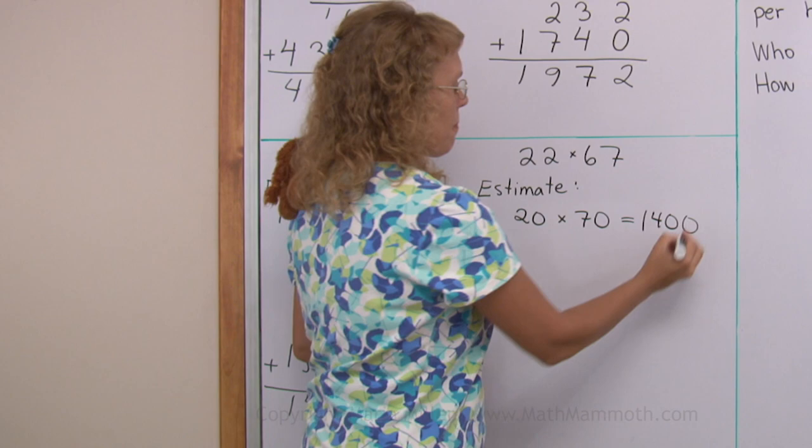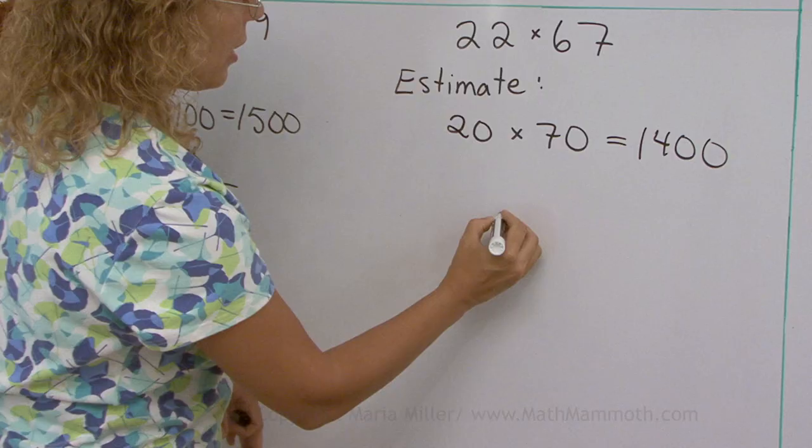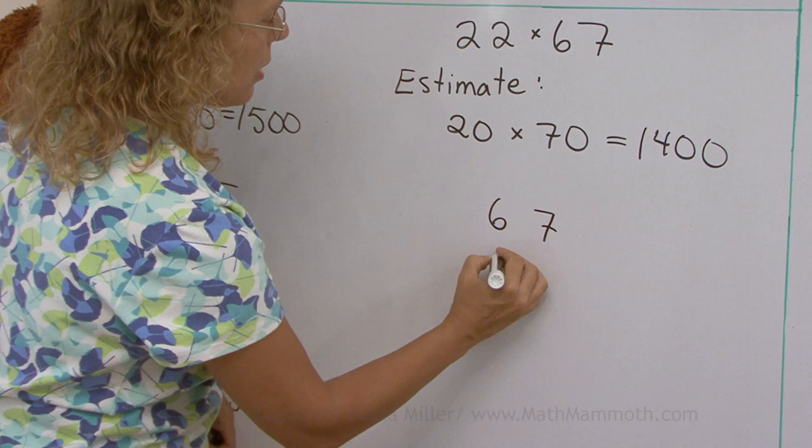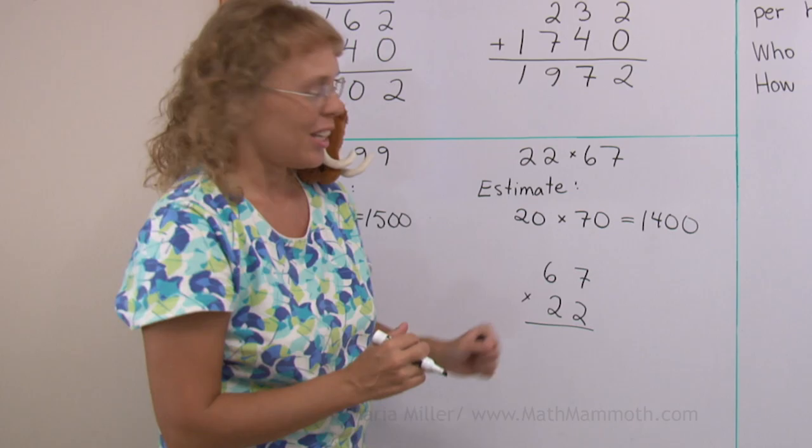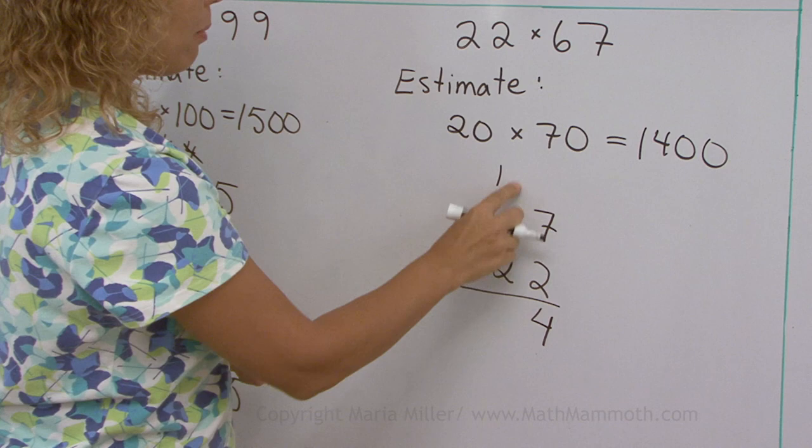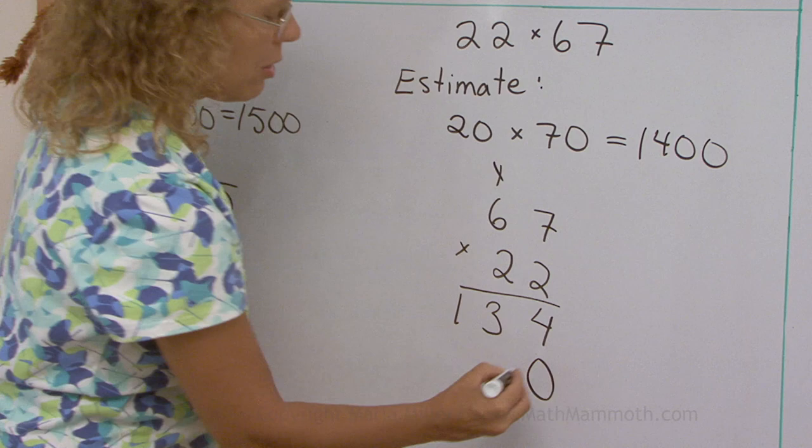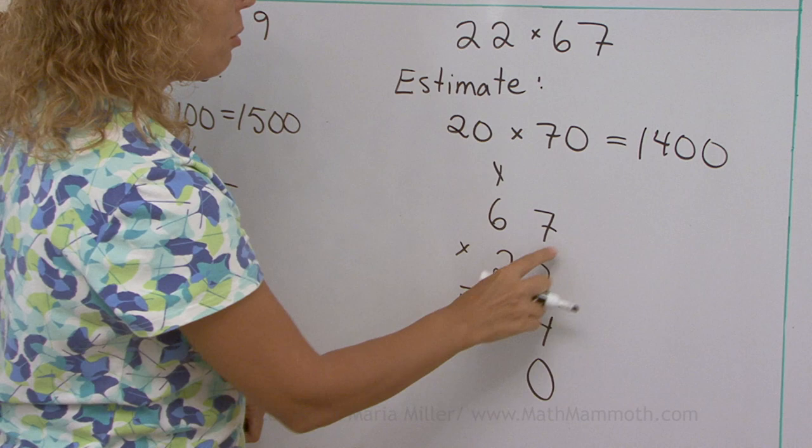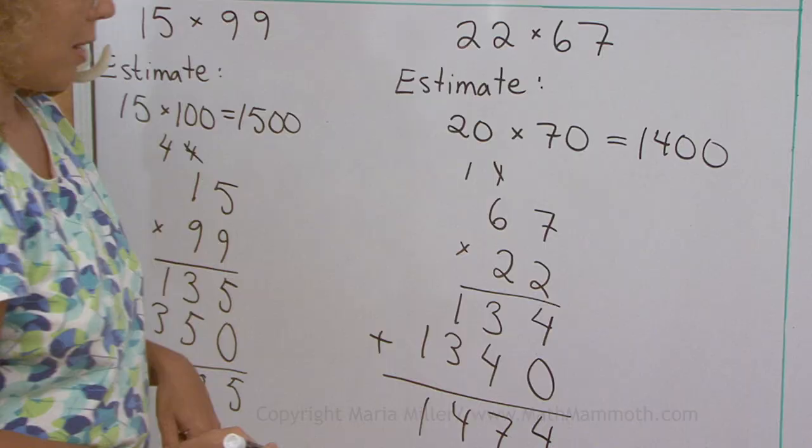And now let's see what happens with the multiplication. Let's put here 67 times 22. Of course, it won't matter in which order you write your numbers here. 2 times 7, 14. And then this is 12 plus 1, 13. And now the 0. Don't ever forget that. And then I'm going to have actually 1, 3 and 4 again because it's the same. 2 times 7, 14. 2 times 6 plus 1 is still 13. 4, 7, 4 and 1. 1,474. Yeah, it's close to 1400. Thank you.